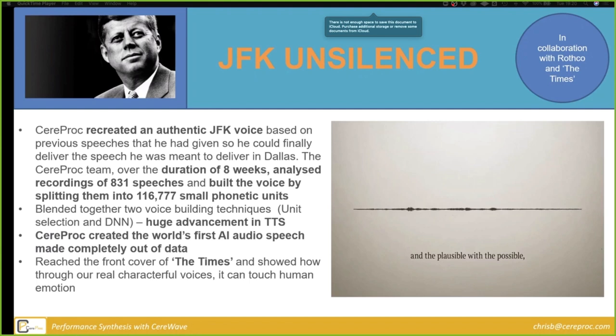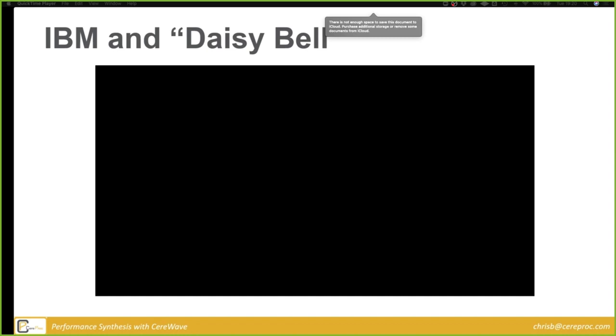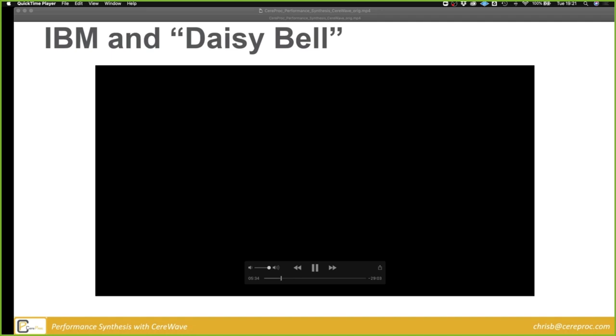What I'm actually talking to you about today is performance synthesis, and the main bulk of this at the moment is singing — something we've been working on quite hard over the last two years. What better way to continue than with a glimpse at the first computer ever to sing? In 1961, the IBM 7094 was that very computer. The vocals were programmed by John Kelly and Carol Lockbaum, and the accompaniment was programmed by Max Matthews.